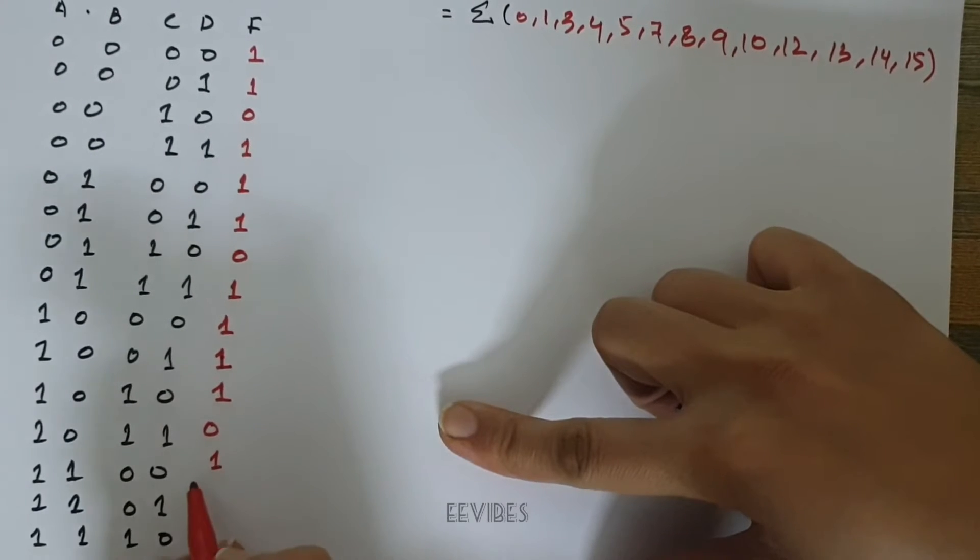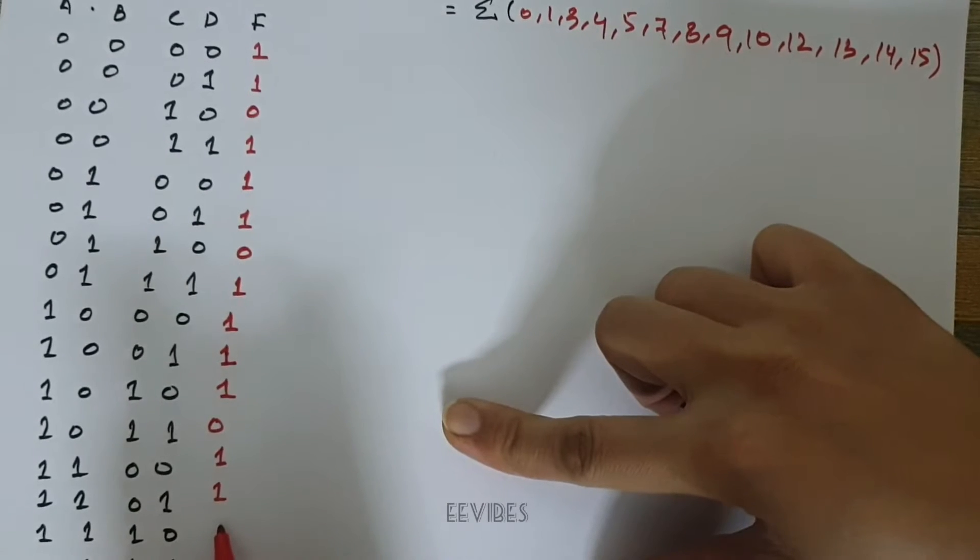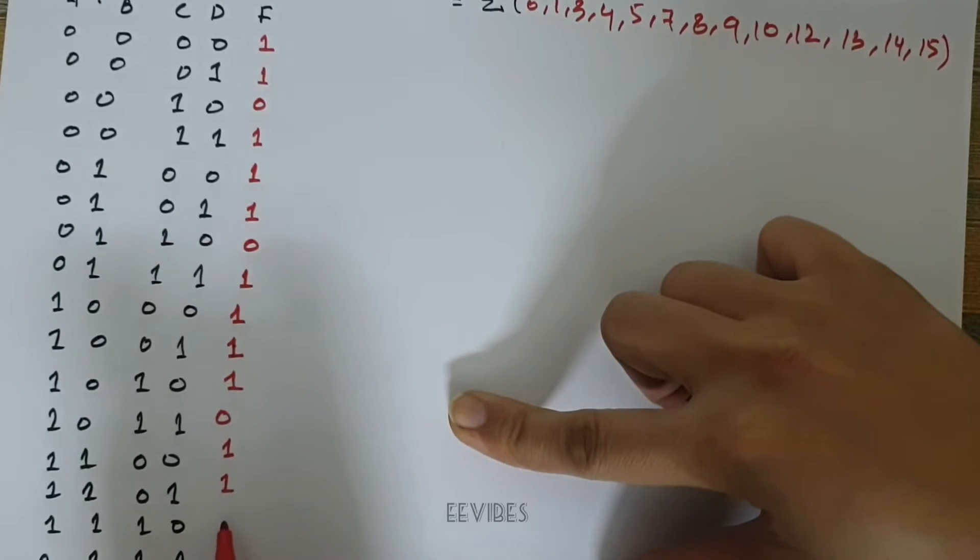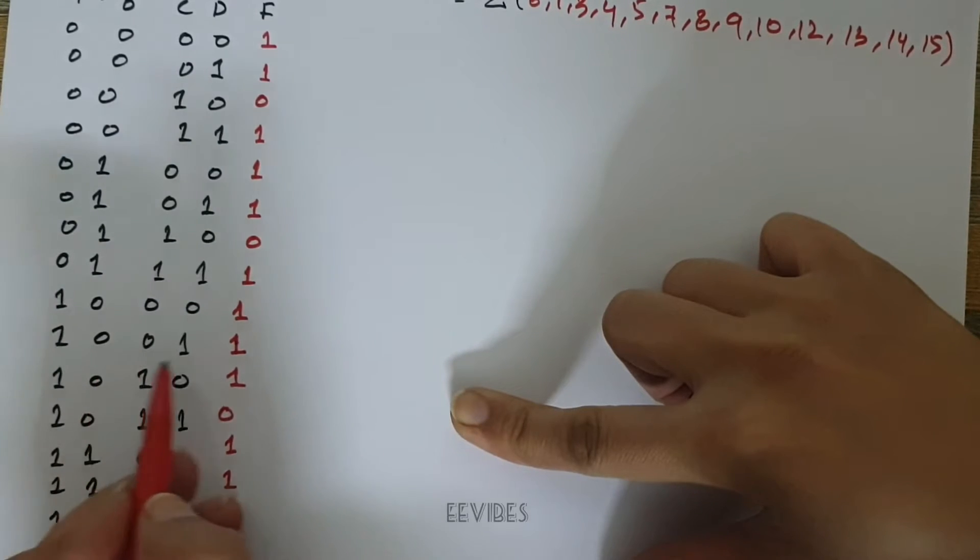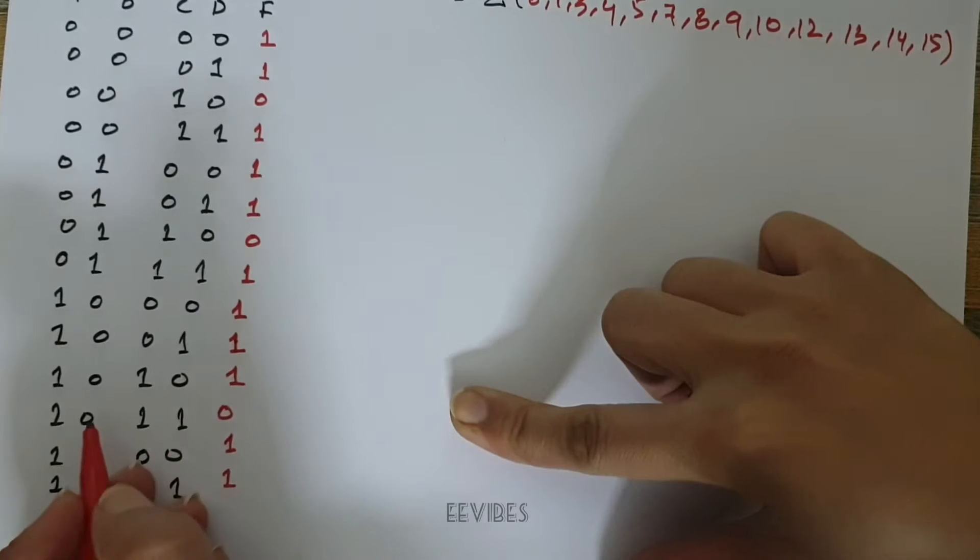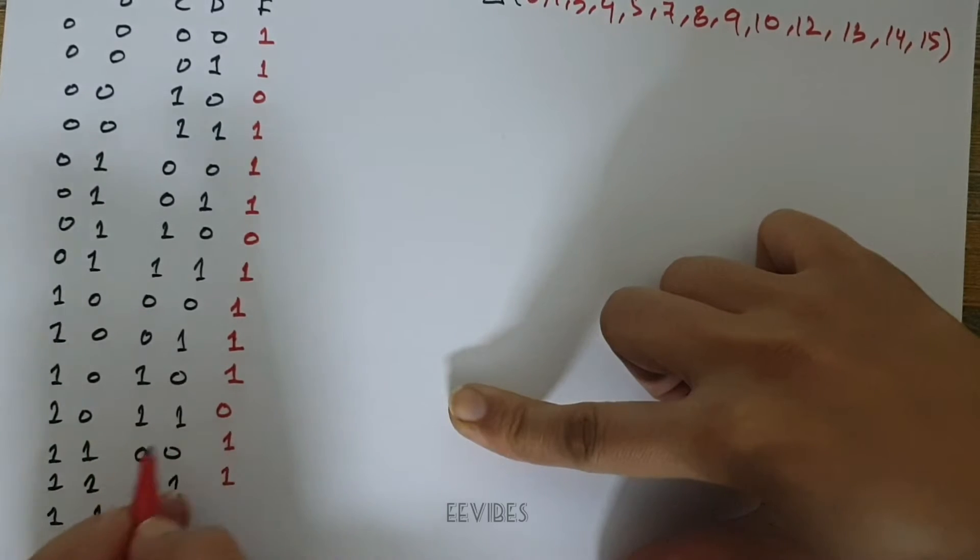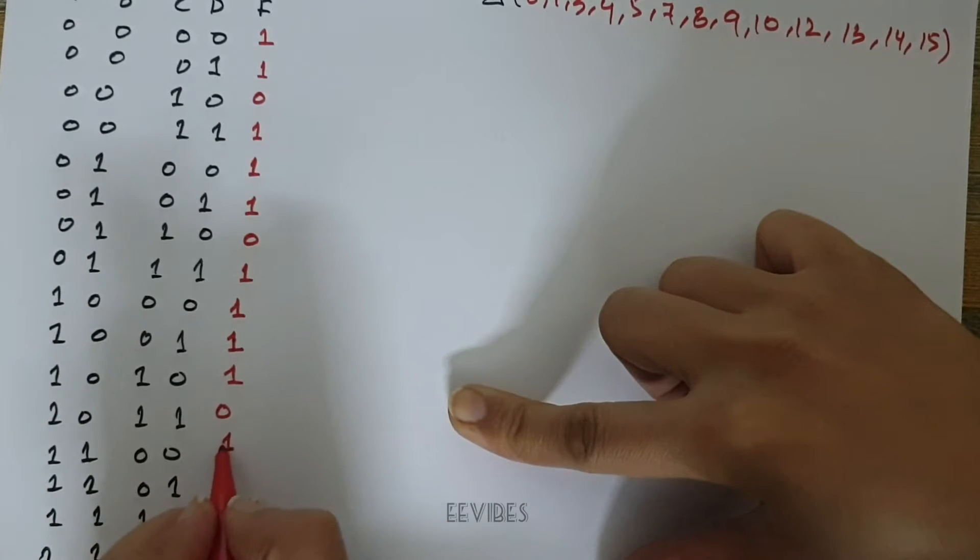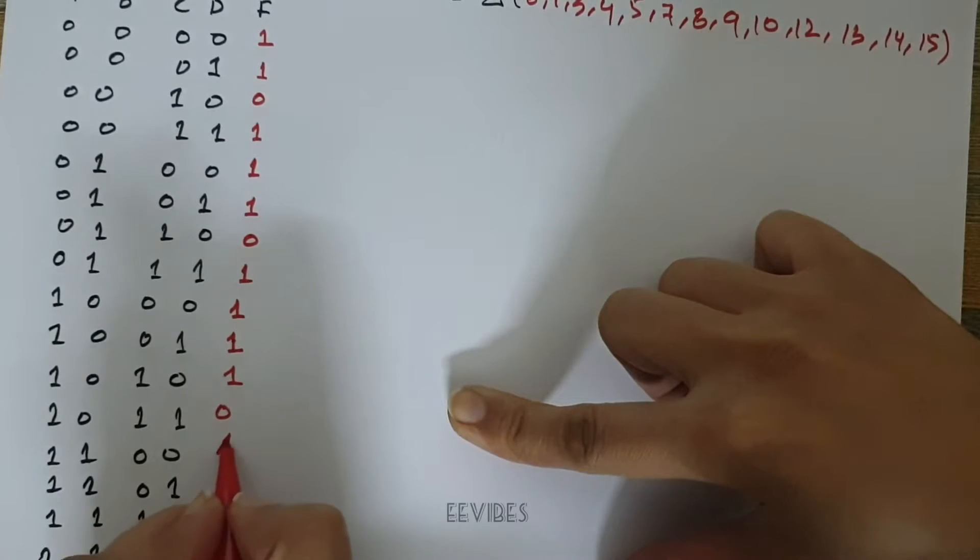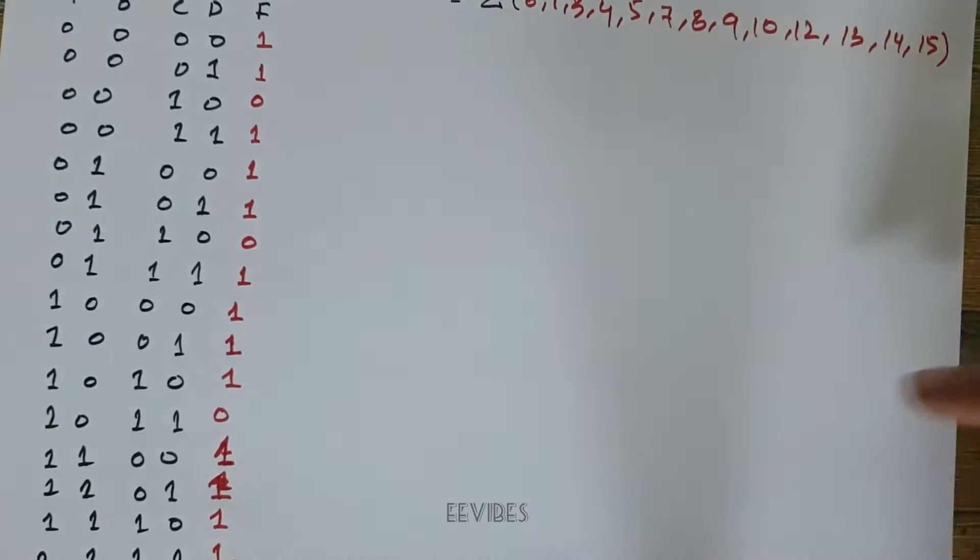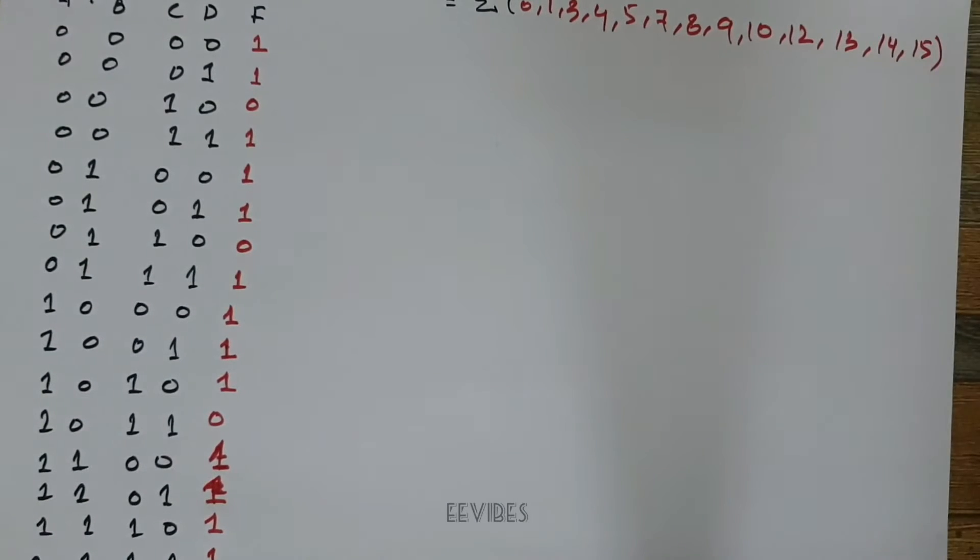For 10, 11, sorry 9 and then 10. For 11 it's 0, for 12 it's equal to 1, for 13 it's equal to 1, then for 14 and 15.